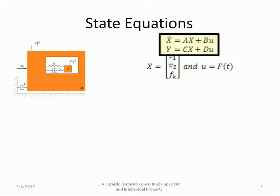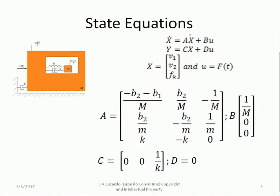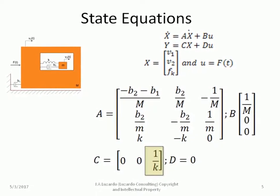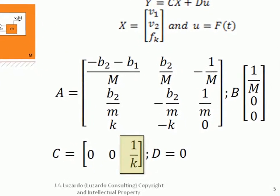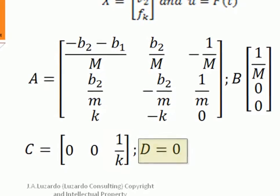The standard state space equations are characterized by the matrices A, B, C and D. First, we need to identify the state variables. In our system, they come naturally to be the velocity of the vehicle V1, whose position we are interested, the velocity of the accelerometer mass V2 and the force in the spring Fk. The input U is given by Ft. Therefore, the matrices A, B, C and D are. Note that we can measure only the spring deflection, x1 minus x2, this is why the only non-zero element of C is the reciprocal of K, the spring stiffness. D equals 0.